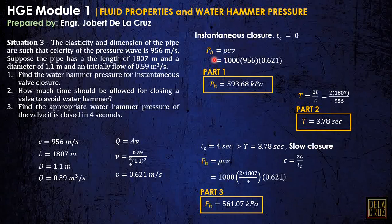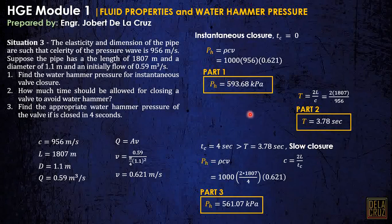These are the two cases: instantaneous closure and slow closure. If TC is less than the required time T, this is a rapid closure — meaning it closes quickly. In that case, the water hammer pressure is simply ρCB using the given celerity directly. Nothing changes for rapid or instantaneous closure — the same formula applies.